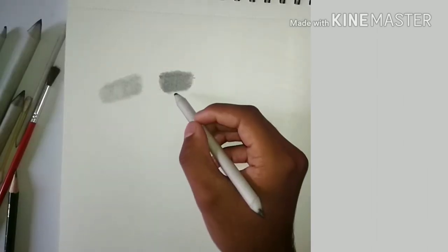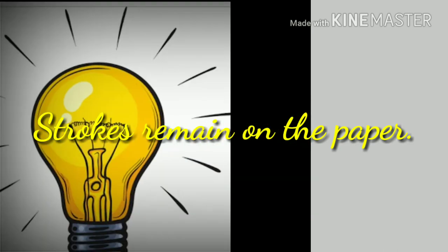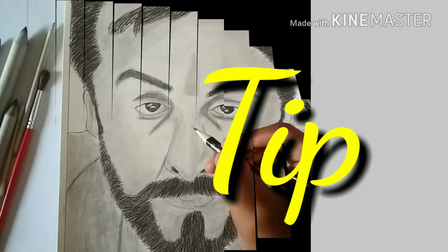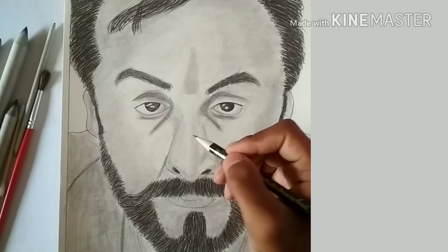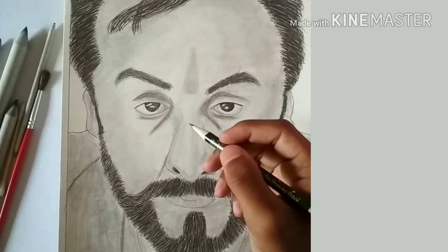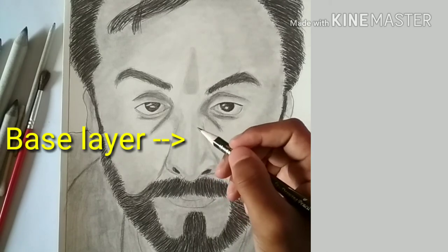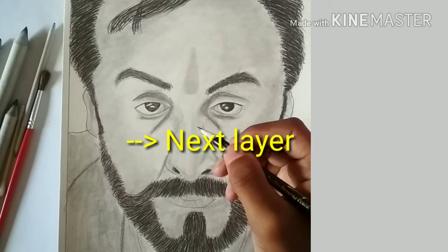You can see that the blending is not smooth here. In portraits, first fill up the base layer, which is the lightest region, and then add layers onto it. As you can see in the video, I added layers on the left and right cheeks.